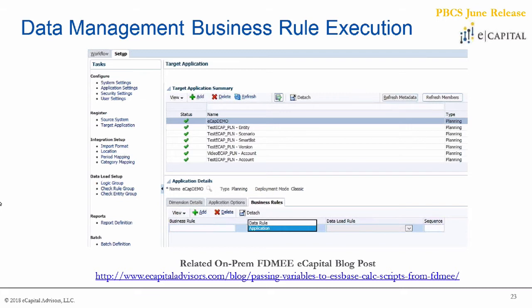What's actually happened here is that you can now execute business rules — which contain calculations like currency conversions or aggregations — as part of your load process. This is very similar to what FDMEE rolled out a while back, and I've actually written a blog that can be referenced for more information on that, and the link is here.